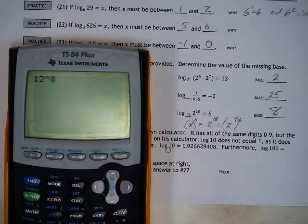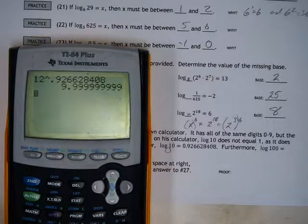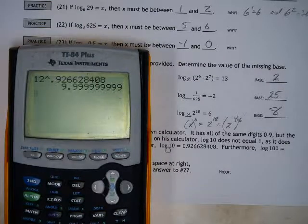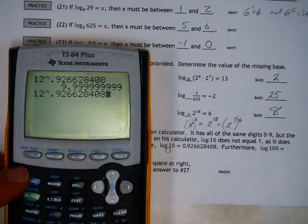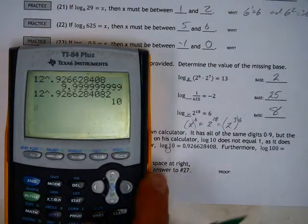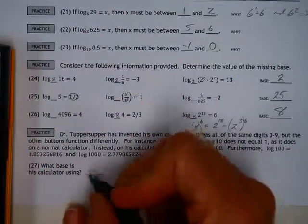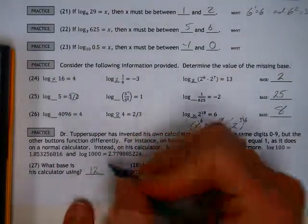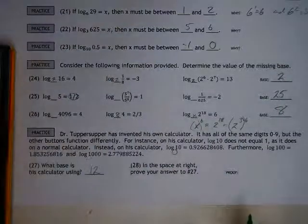It turns out if you take 12 and raise that to the power of 0.926628408, it's going to be darn close. But it's going to be closer than you can get with anything else. In fact, I just went just to see, if I put a 2 in there, it actually gave me exact 10. Which is still probably an approximation, but it's darn close. So, the base that the calculator is using is a base of 12, because 12 to that power is equal to 10.